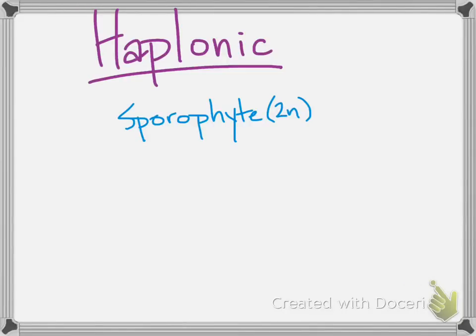Now that we've talked about the key terms diploid and haploid, and the chromosomes, we're ready to talk about the variety of life cycles that various types of organisms utilize. There are three main types, and look to their names to provide a hint as to how the organism spends the majority of its life cycle.